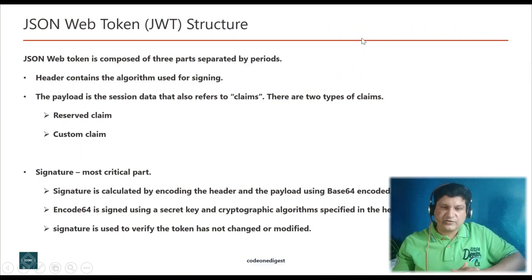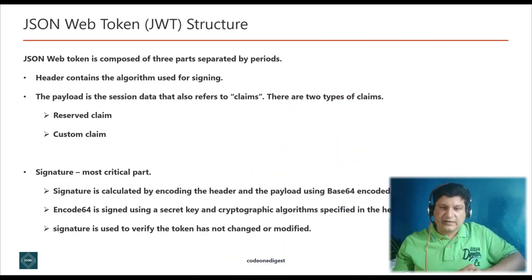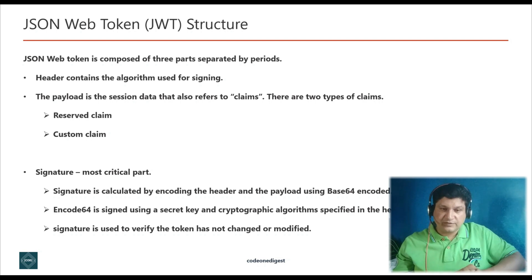Let's understand the structure of the JWT token. The JSON Web Token is composed of three parts separated by periods. The header contains the algorithm used for signing the token. The payload section contains the session data, also referred to as claims. There are two types of claims: reserved claims and custom claims. The JWT specification defines reserved claims that are recommended to use when generating a JWT token.